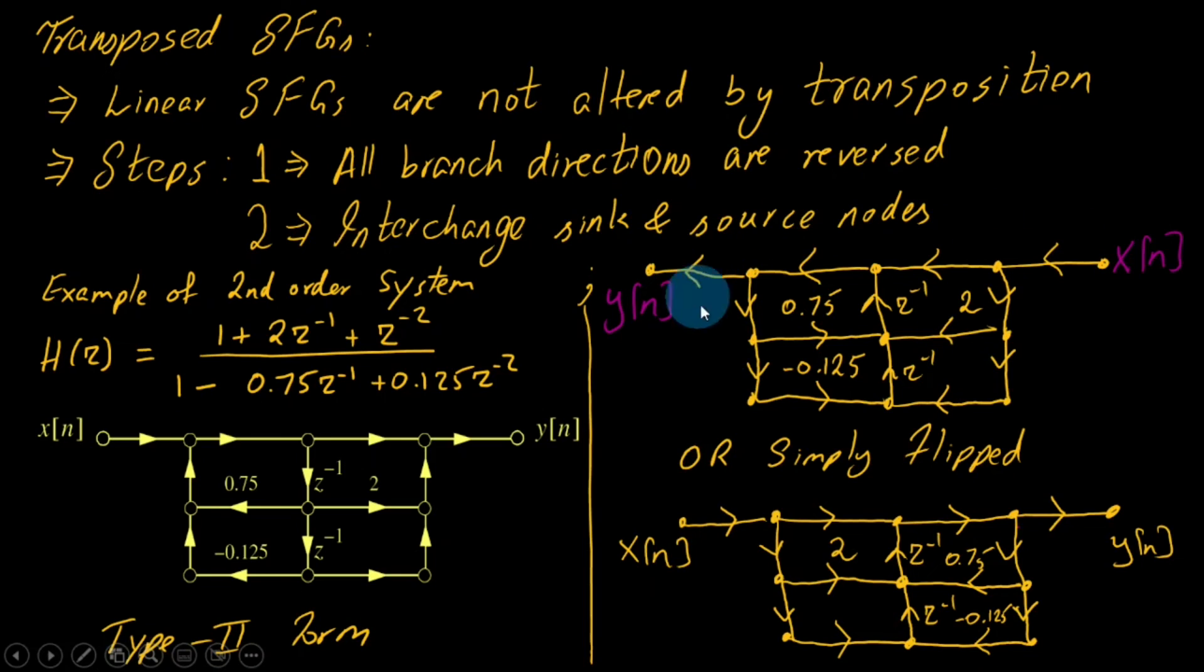Everything is flipped and we have b0, b1, b2, a1, and a2. Compared to direct form 2, where we had poles on the left and zeros on the right, in transposition form we have zeros on the left and poles on the right.